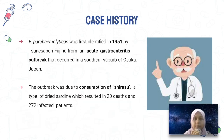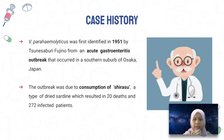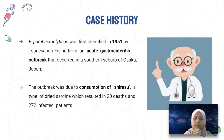Vibrio parahaemolyticus was first identified in 1951 by Shunro Fujino, a researcher at the Research Institute of Microbial Diseases (RIMD), Osaka University. He discovered this bacteria from an acute gastroenteritis outbreak in Osaka, Japan. The outbreak was due to consumption of shirasu — a type of dried sardine — which caused 20 deaths and 272 infected patients.